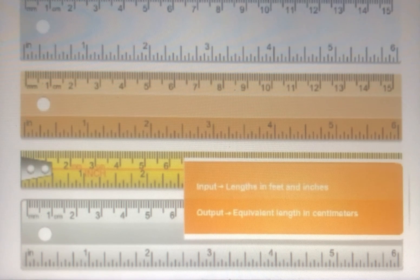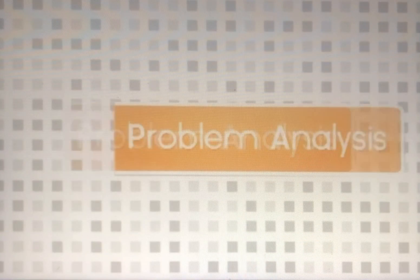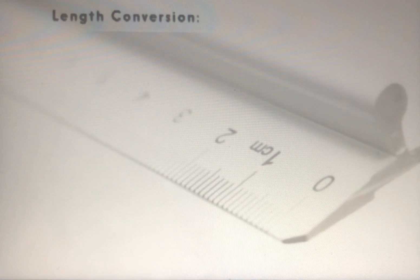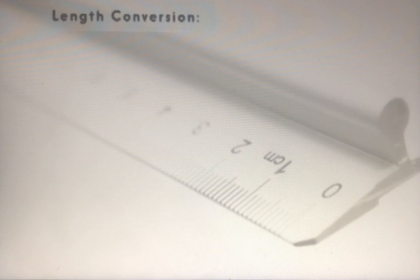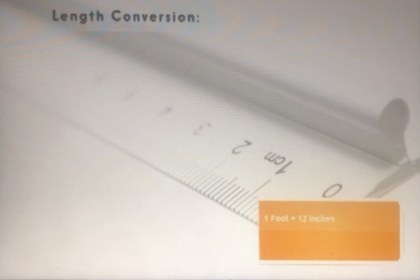The program assumes that the given lengths in feet and inches are integers. The first thing the program needs to do is convert the length given in feet and inches to all inches. To do this, you multiply the number of feet by 12, as 1 foot is equal to 12 inches, and add the given inches.